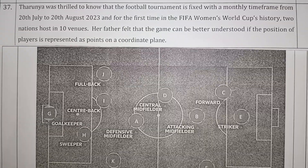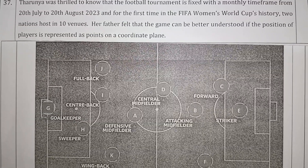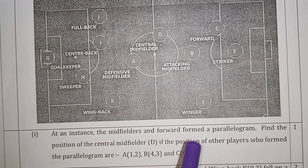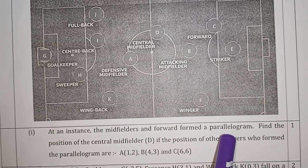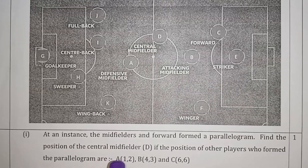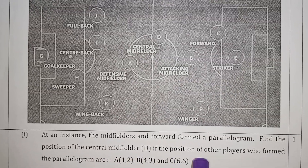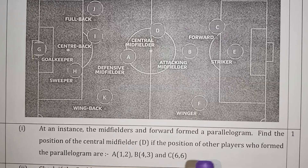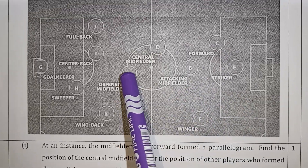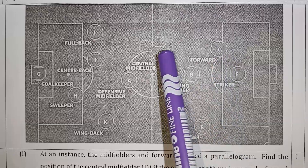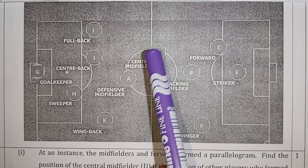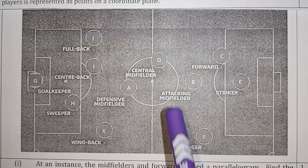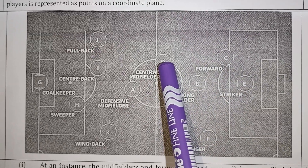First question: at an instance, the midfielders and the forward form a parallelogram. Find the position of the central midfielder D, if the positions of the other players who formed the parallelogram are A, B, and C. So A, B, C and D form a parallelogram.